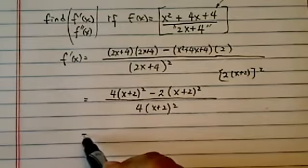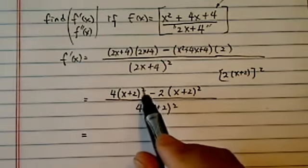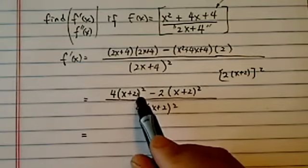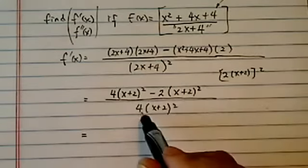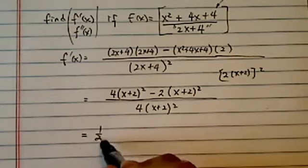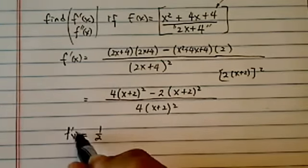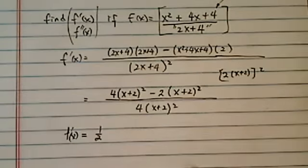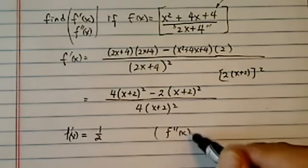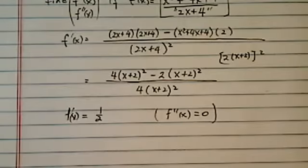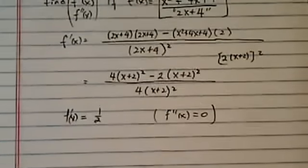And this actually turned out to be a pretty nice one. So this one is twice of x squared on top and then 4 on the bottom, so I have f prime of x equal to 1/2. And then f double prime of x is really easy. It's just zero because it's a constant.